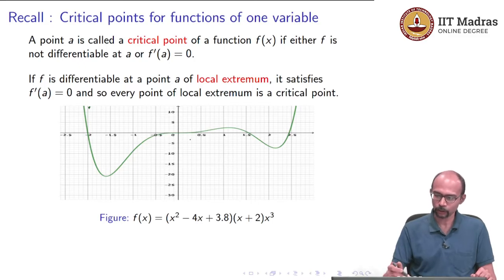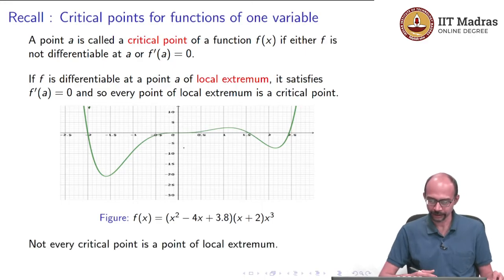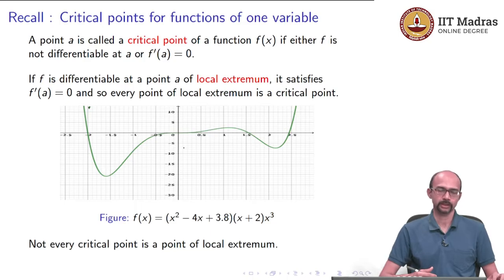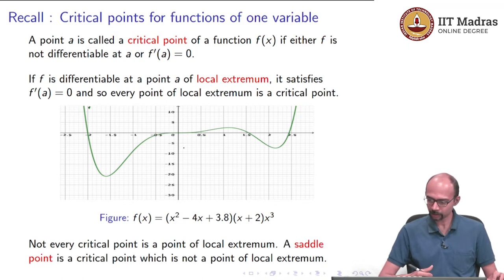There is also another point at 0, which is what we had called a saddle point. Not every critical point is a point of local extremum, and this is why we needed refined tests to determine which critical points are actually local maxima or local minima, because some of them can also be saddle points.